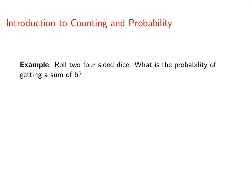All right, as an example, let's roll two four-sided dice. What is the probability of getting a sum of six? That is, when we add up the two dice, we get a sum of six.